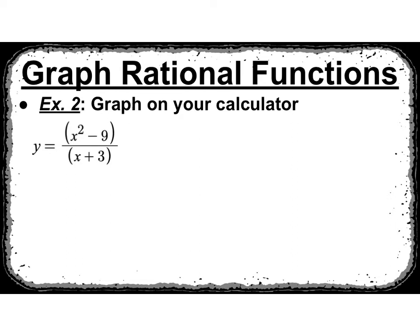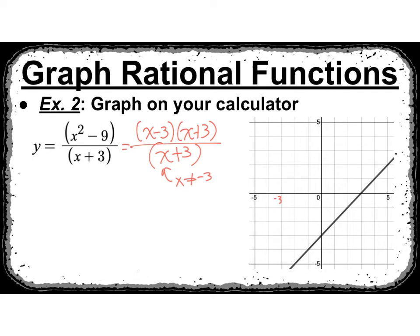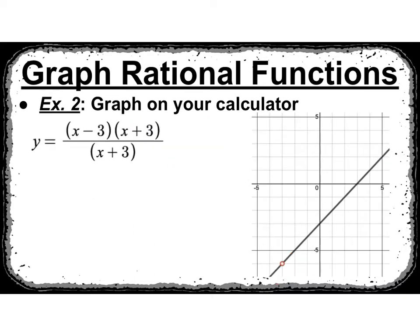Go ahead and graph this one — again, you need two sets of parentheses. It's going to look like this, which might look a little weird because it looks like a line. Let's factor it: (x minus 3)(x plus 3) all over (x plus 3). x can't be negative 3, but your calculator just keeps going. That's not what's really happening — x still really can't be negative 3. So you get a hole, not a vertical asymptote. Holes trump vertical asymptotes — you would not have a vertical asymptote there, just a hole.